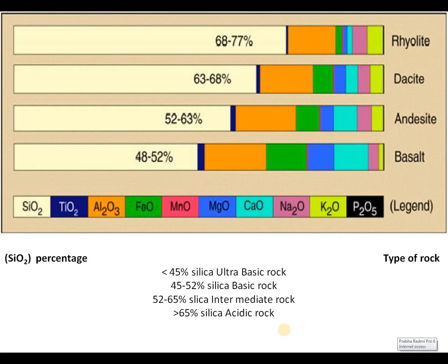This is the SiO2 percentage axis. According to SiO2 percentage on one side and the type of rock on the other, rhyolite has the highest SiO2 percentage, followed by dacite, andesite, and basalt, where SiO2 percentage decreases. Similarly, TiO2, Al2O3, FeO, MnO, MgO, CaO, Na2O, K2O, and P2O5 are also shown in the diagram.